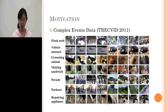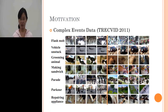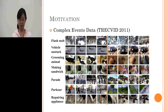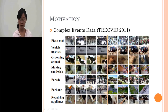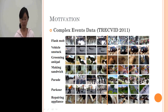The challenge here is that the data is very diverse. It is recorded from different illumination conditions and different viewpoints. Also, for example, grooming an animal, like grooming a cat and washing a dog, both belong to the grooming animals category.